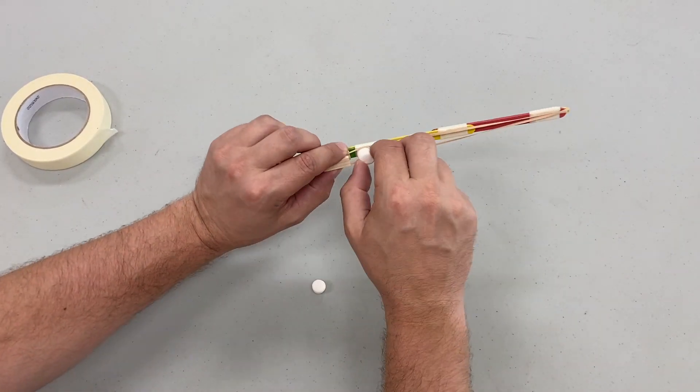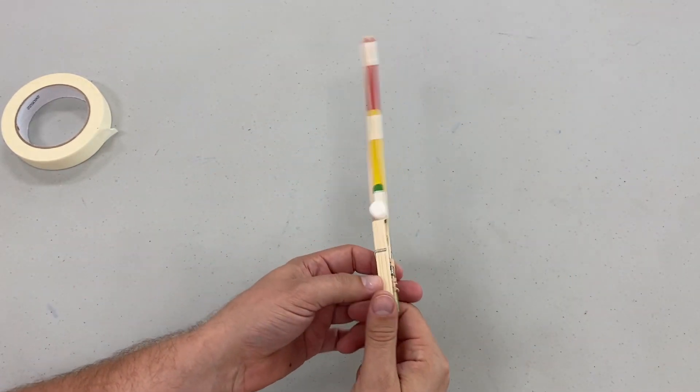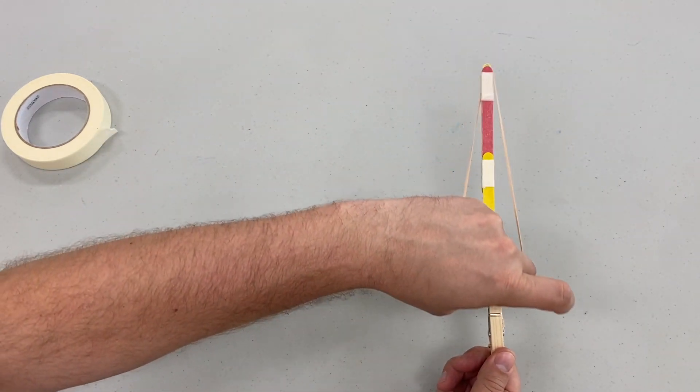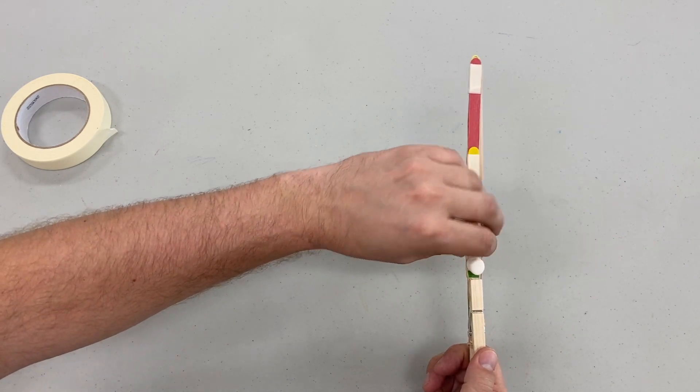When you're ready to fire, load your projectile in and push it right down against the clothespin and make sure the rubber bands are on both sides of it holding in place before you fire. Because we have tape on the end holding our rubber band and paper clip in place it should not fly off and only your projectile should launch.